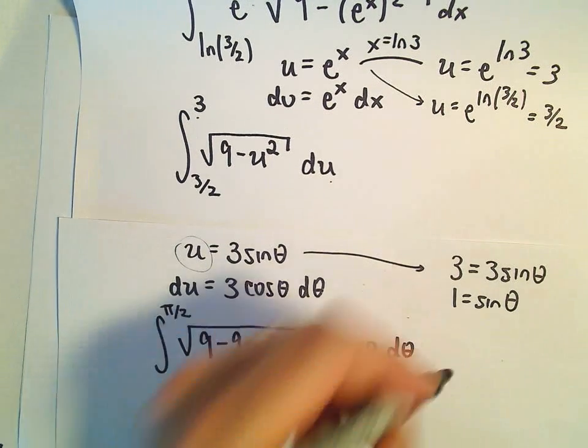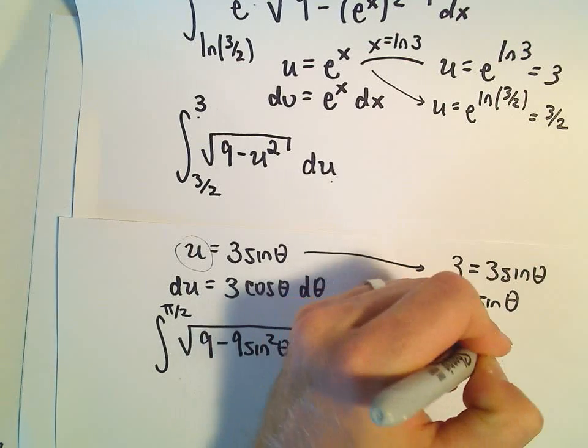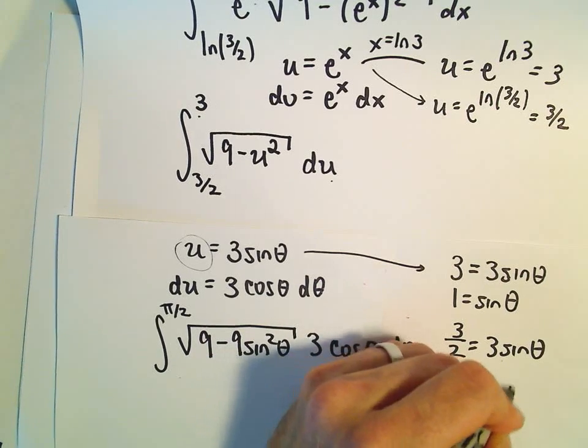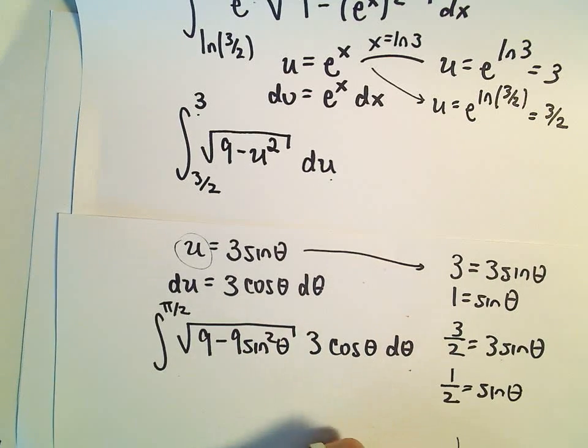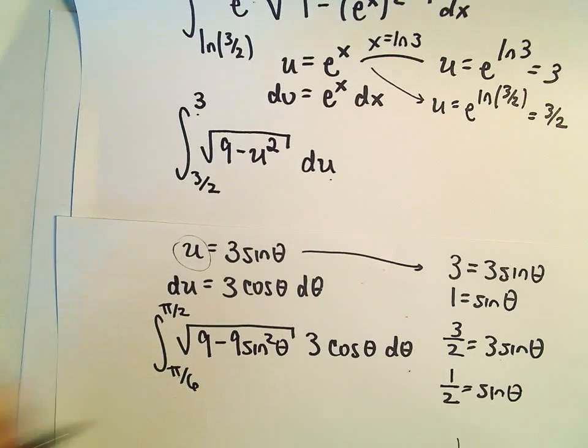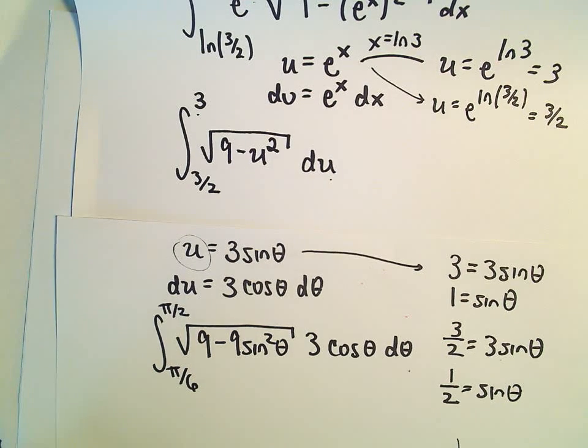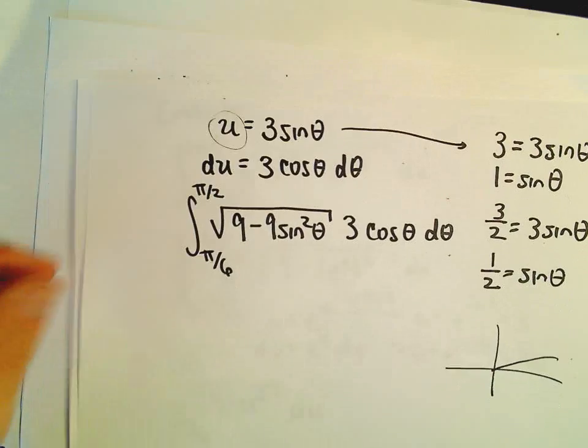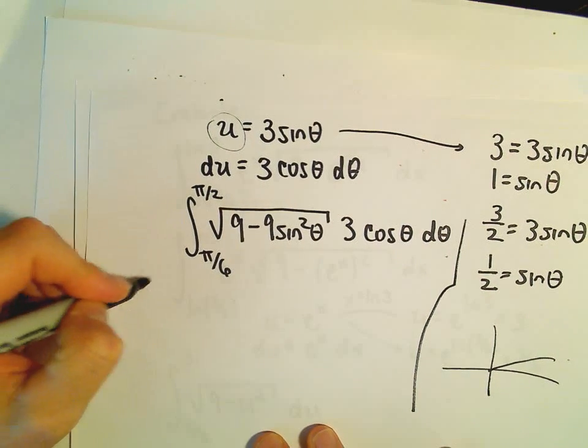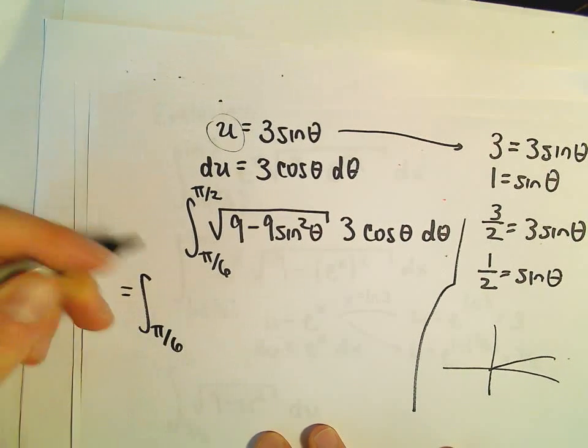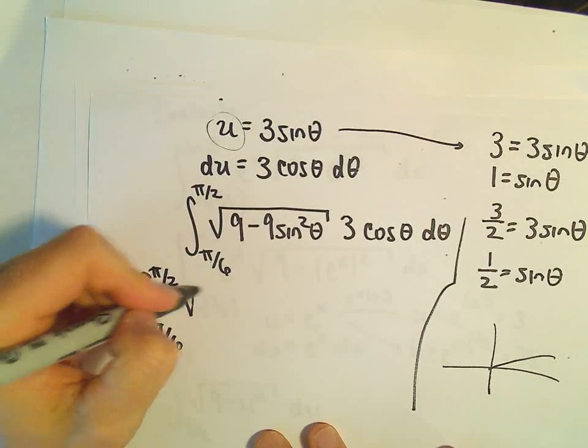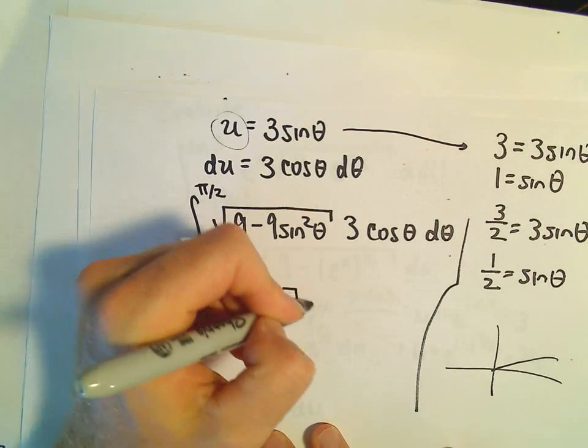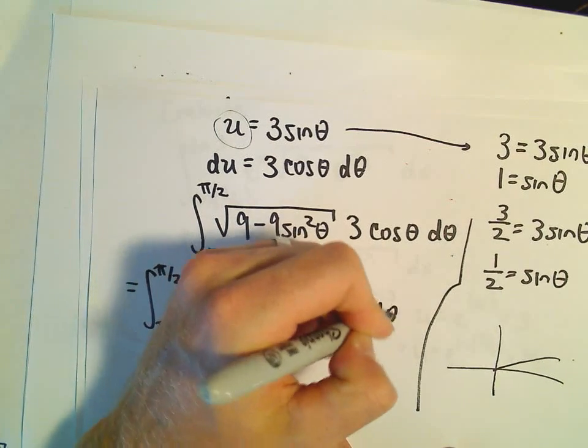When we look at 3 halves, we'll get 3 halves equals 3 sine theta. If we multiply both sides by 1 third, we'll get 1 half equals sine theta. That's going to be pi over 6. Sine of pi over 6 will be 1 half. Now it's just doing the algebra and the trig identity. We've got the integral from pi over 6 to pi over 2. We can factor the 9 out and have 1 minus sine squared theta.